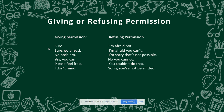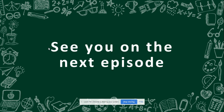Now, how to refuse permission — kalau menolak memberikan izin. You can say: 'I'm afraid not.', 'I'm afraid you cannot.', 'I'm sorry, that's not possible.', 'No, you cannot.', 'You couldn't do that.', or 'Sorry, you're not permitted.' That's all for this video. Don't forget to practice and make your own examples from the expressions. See you in the next episode. Bye!